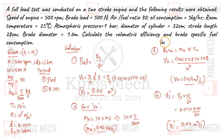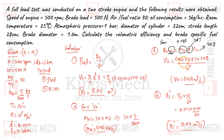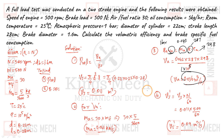Using the ideal gas law PV = mRT: pressure is 1 bar (1×10⁵ Pa), R is equal to 288 J/kg·K, temperature is 298 K. Solving for VA, I get 0.036 m³ per second. So the value of VA is 0.036 m³ per second.